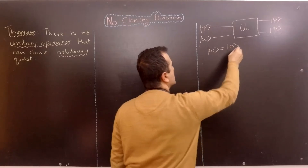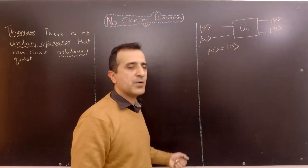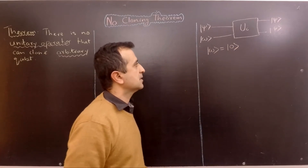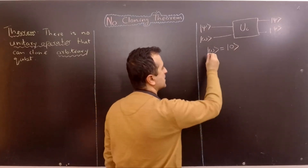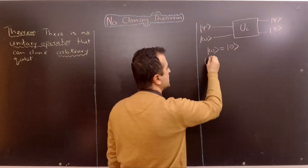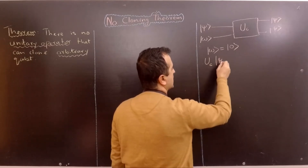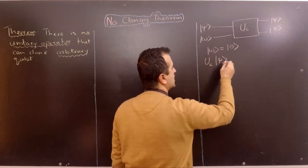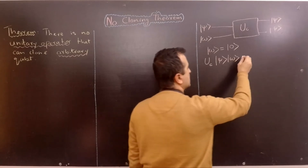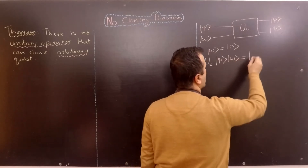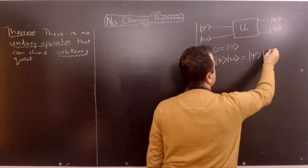The same proof works if we use |ω⟩ to be any arbitrary qubit. Mathematically, we can say that our unitary operator is applied on |ψ⟩ and |ω⟩ and gives us an output of two identical copies of |ψ⟩.